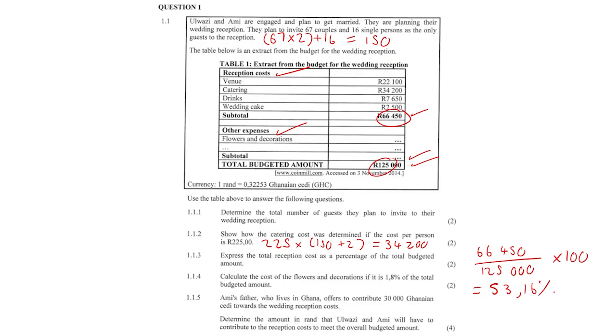Question 1.1.4: Calculate the cost of the flowers and decorations if it is 1.8% of the total budgeted amount. The flowers and decorations is 1.8% of the total budgeted amount, so we multiply it by 125,000 and we get 2,250. Remember this 1.8%? You can use the percentage on your calculator or alternatively write it as 0.018 in decimal form.